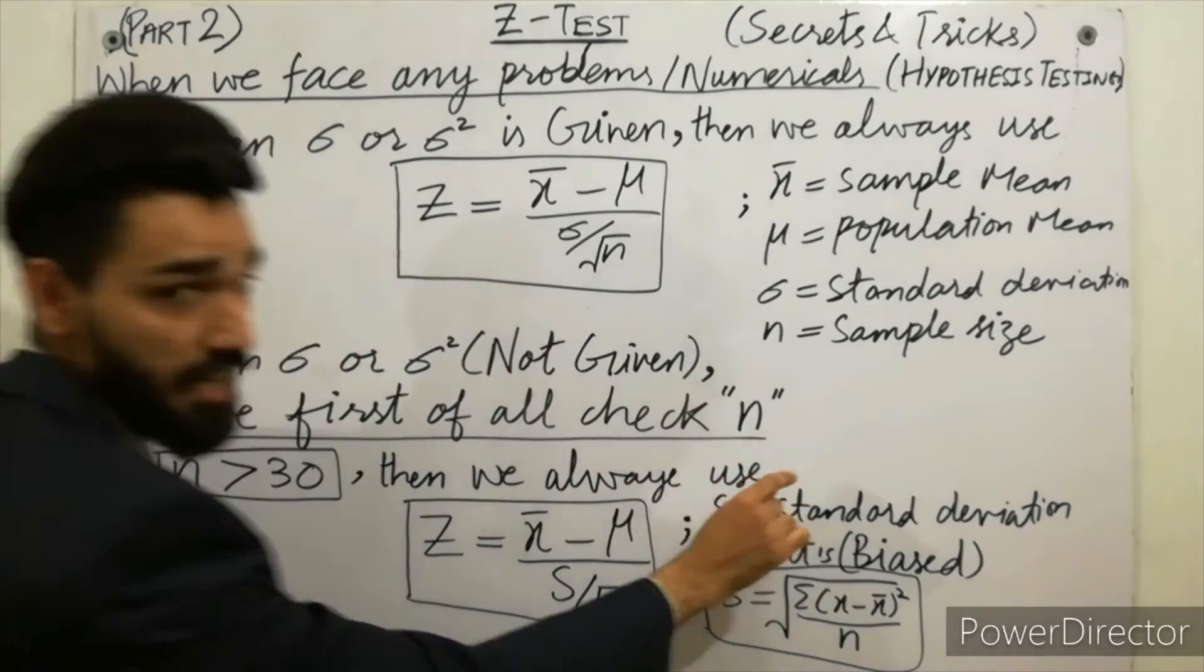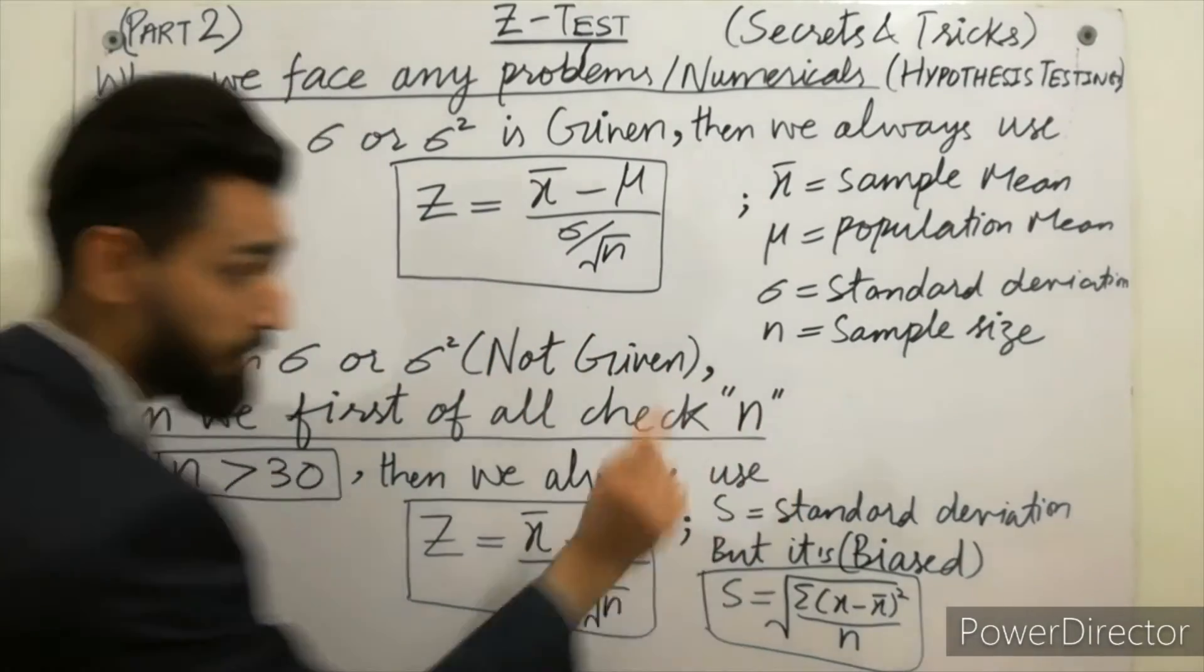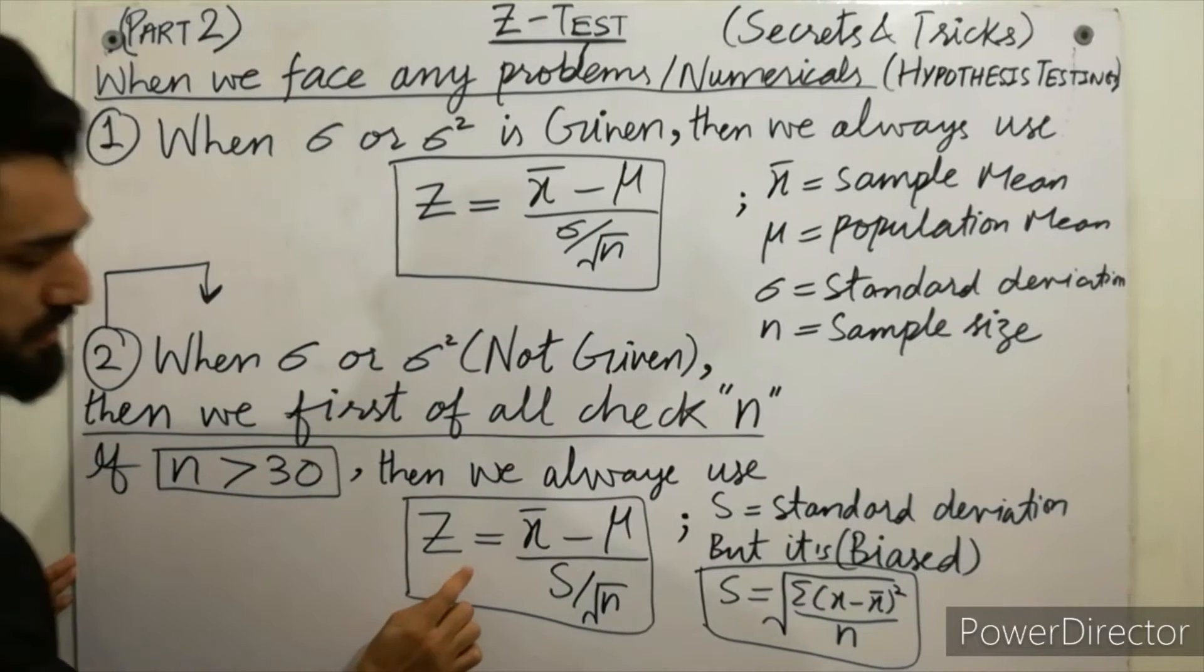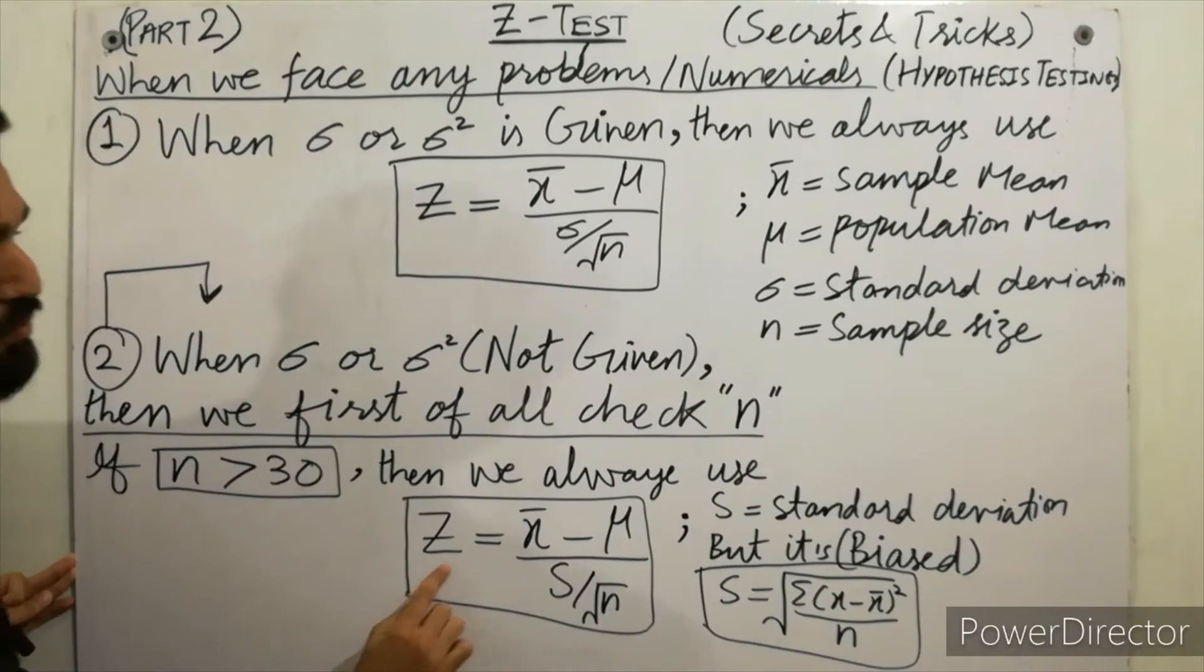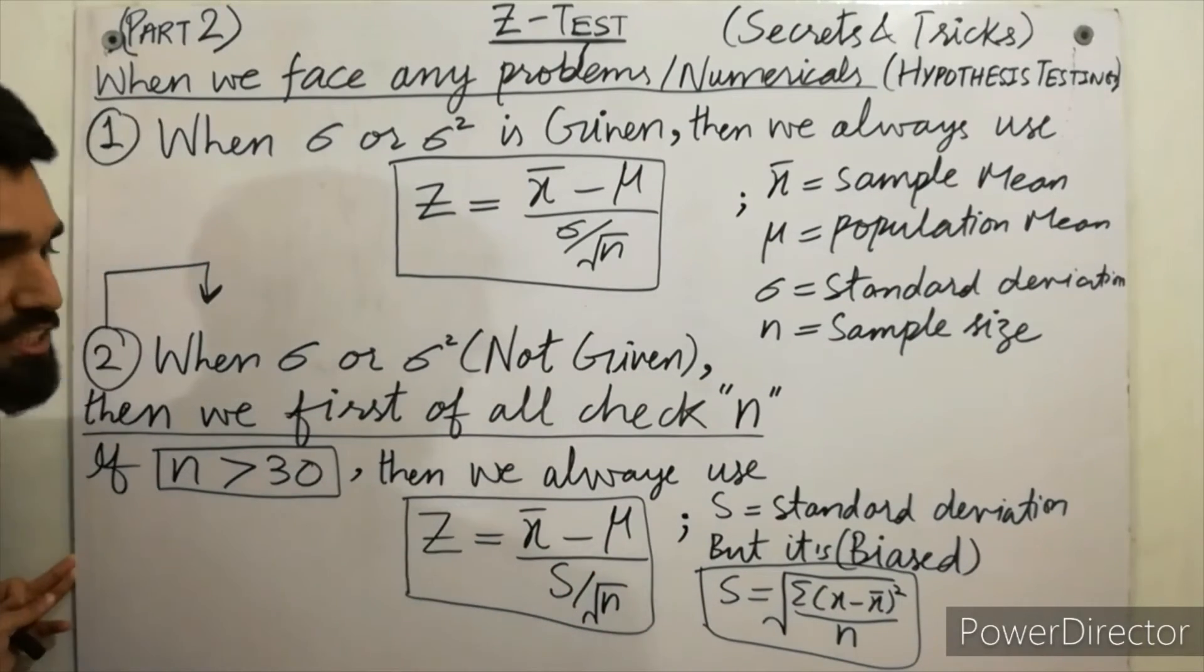Just focus: if sample size is greater than 30, then we always use the Z-test. Z = (x̄ - μ)/(s/√n).